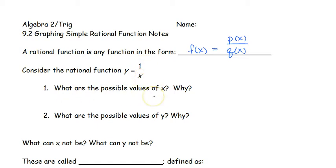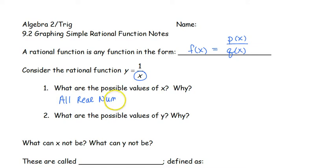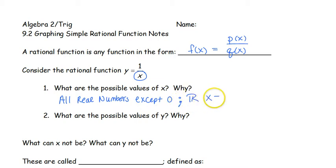What are the possible values of x? We want to think about what numbers can we plug in for x so that we get an actual answer. Instead of thinking what can I put in, think what can't I put in. The only number that I can't put in there is 0 — 1 over 0 is going to be undefined. So all real numbers except 0: all reals, x cannot equal 0.